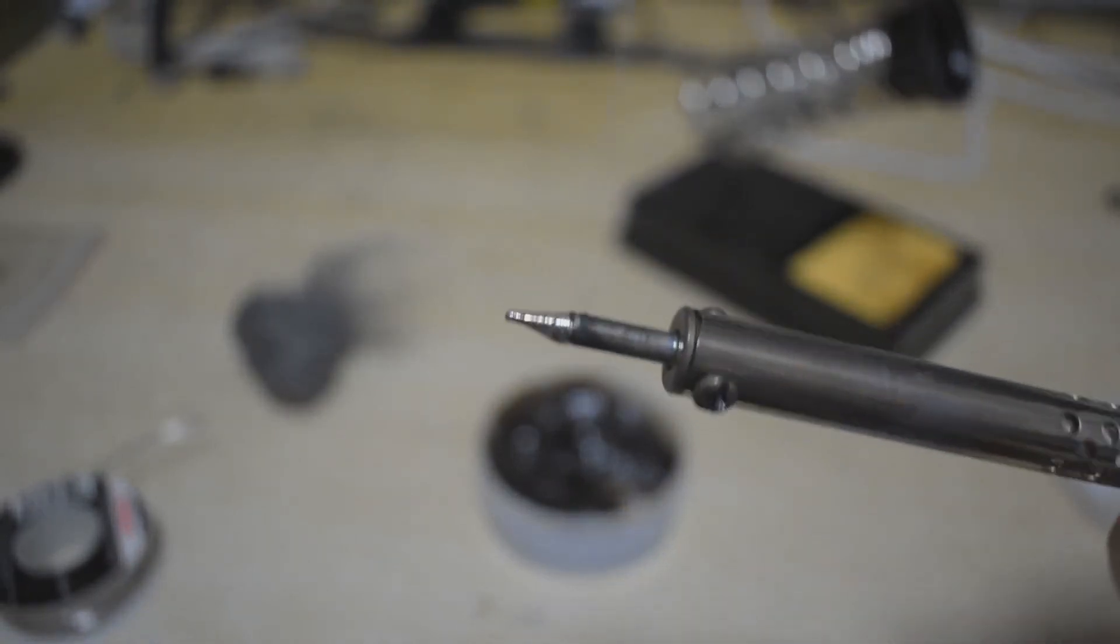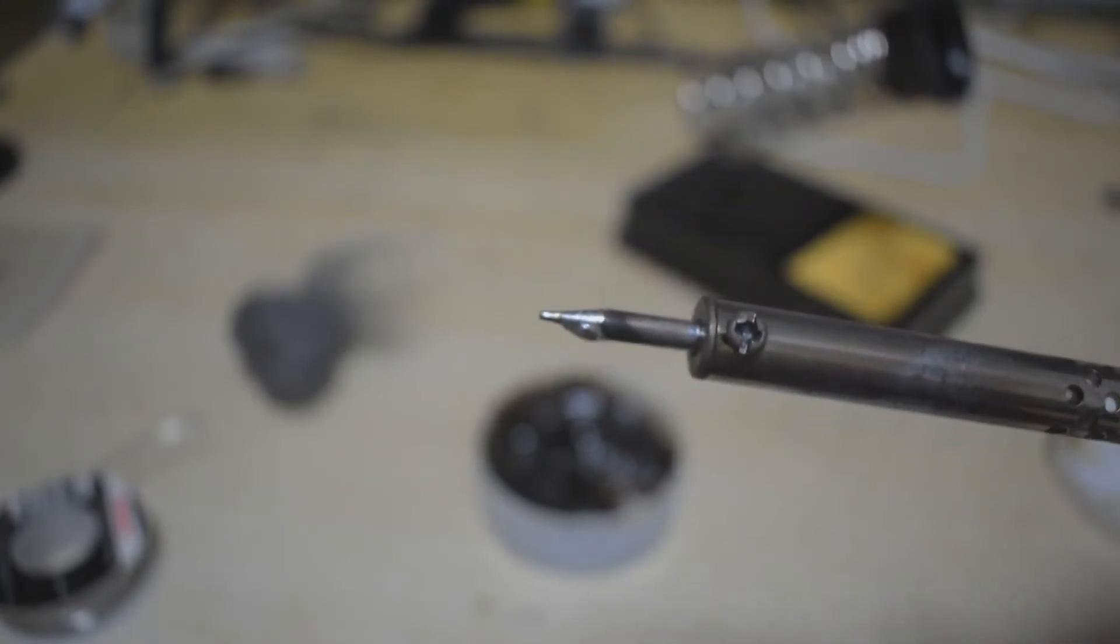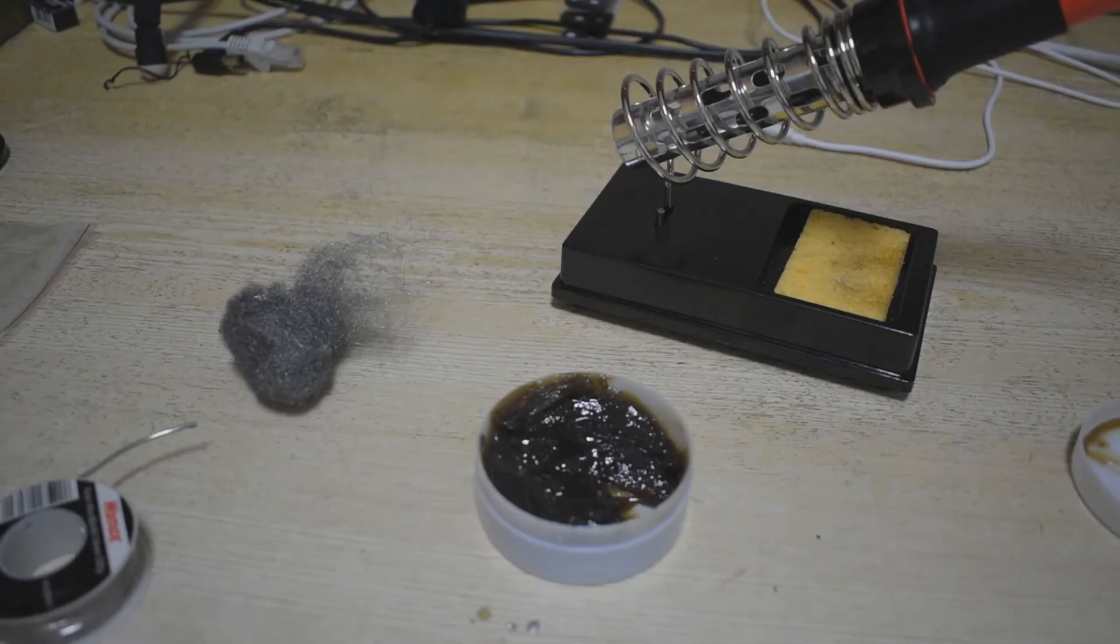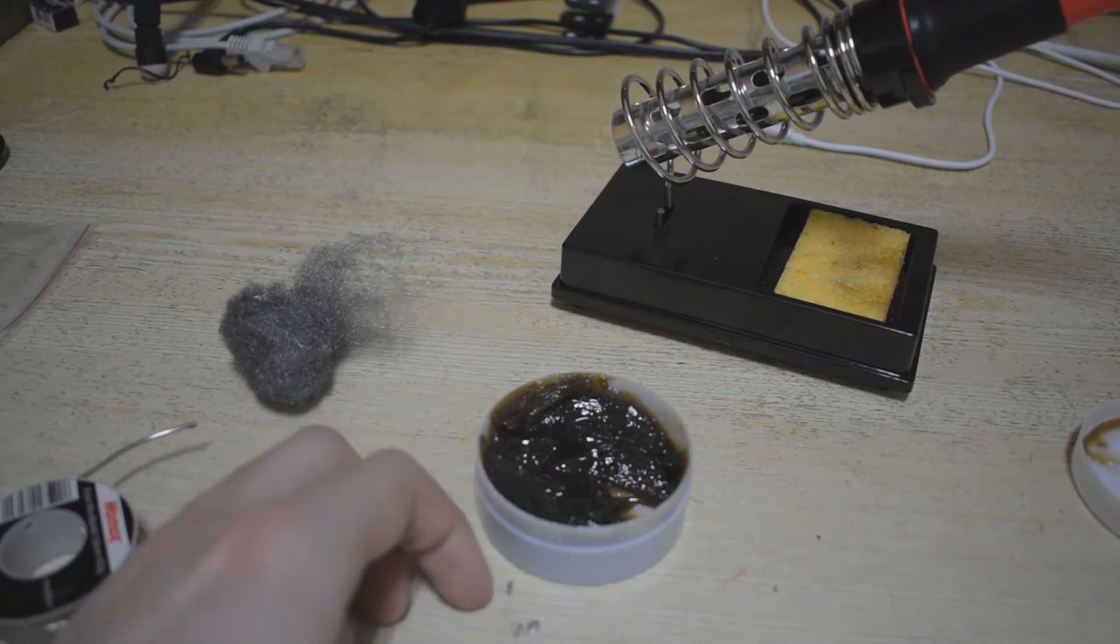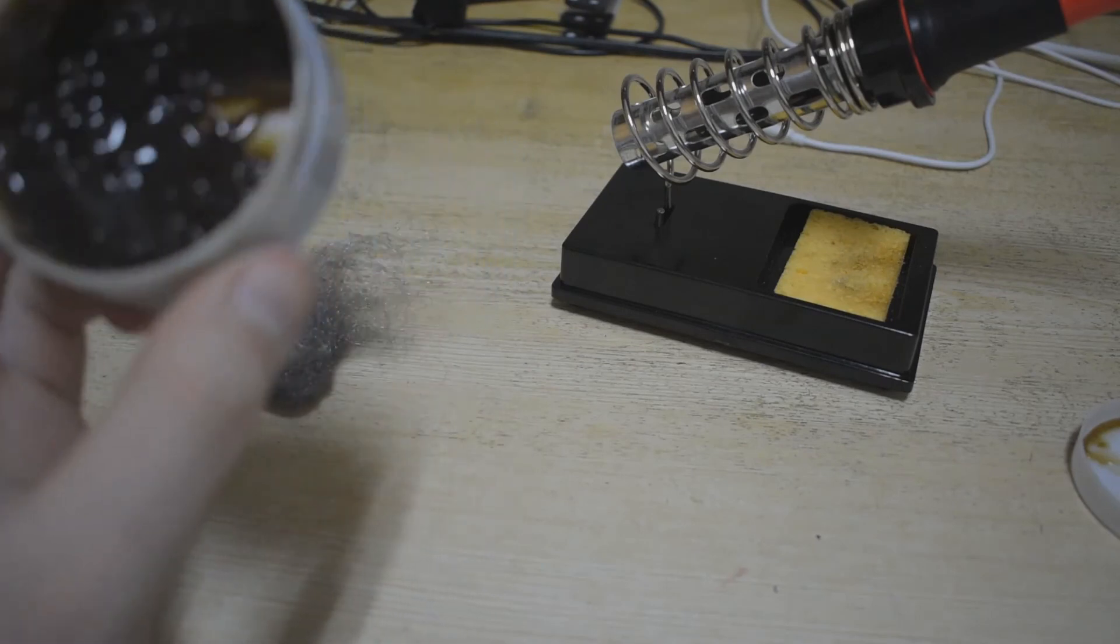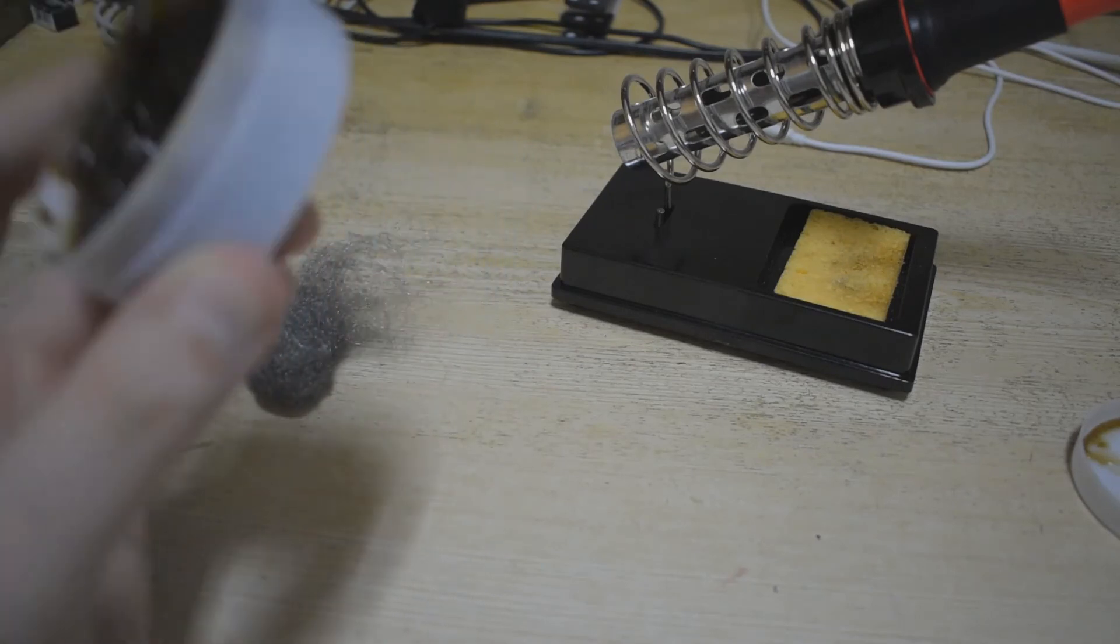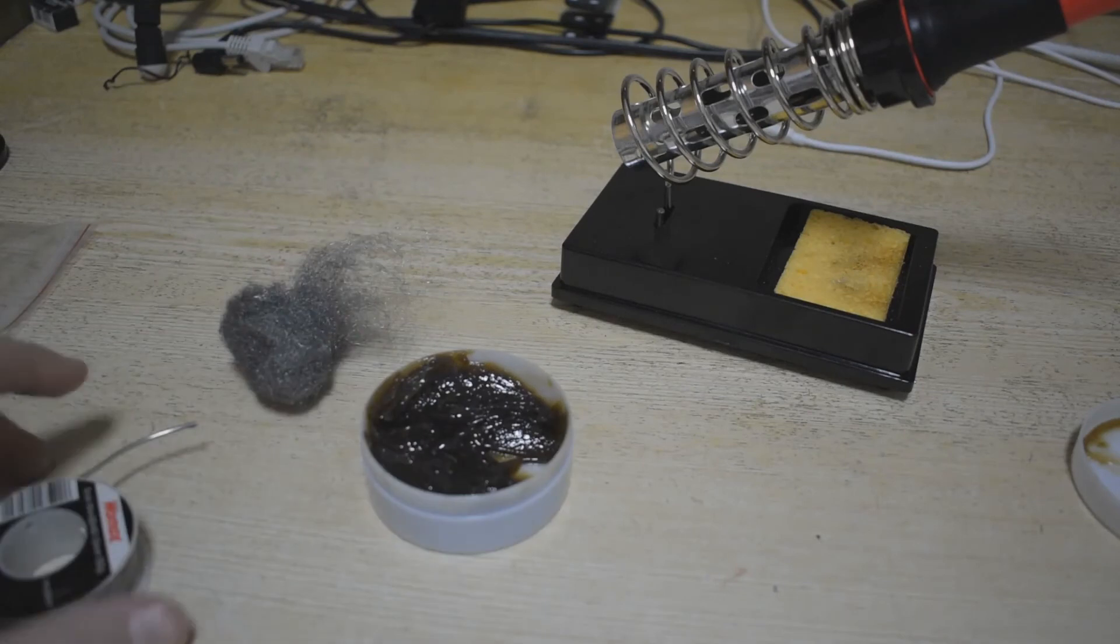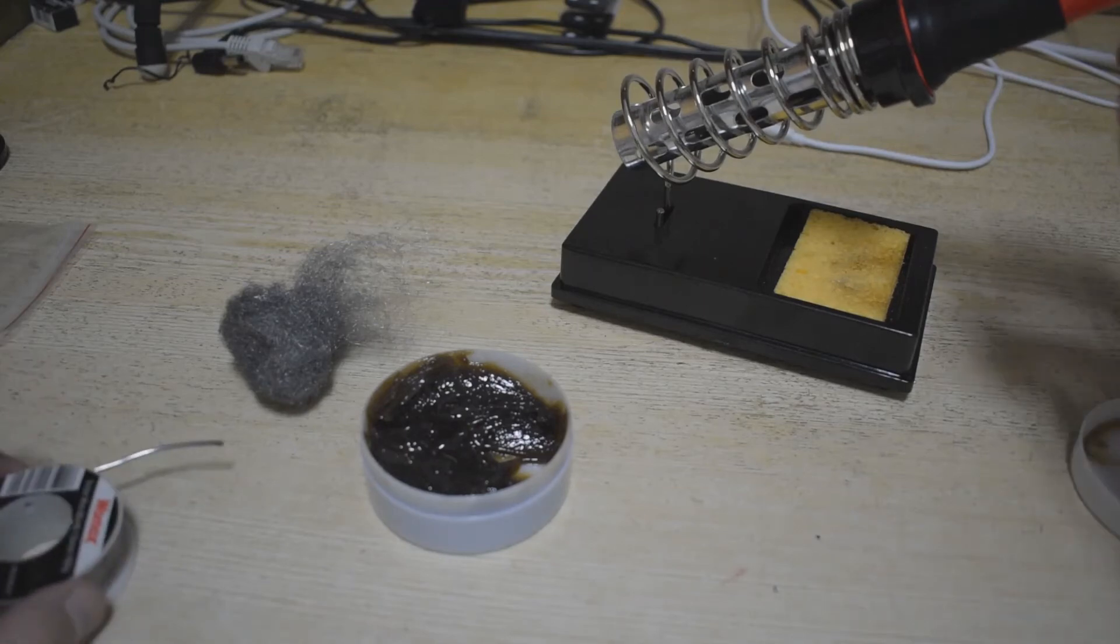Now you're going to agree that this tip looks much, much better than it did at the start. And of course, just turn it off and let it cool. And that is how you clean the tip of a soldering iron. That's how you retin a soldering iron.